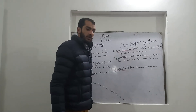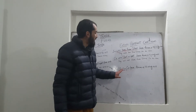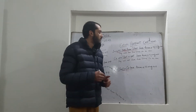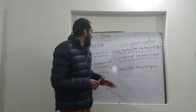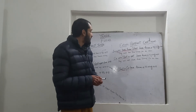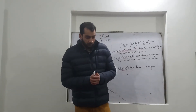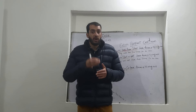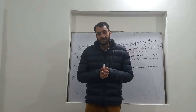For interrogative sentences, the structure is: will or shall plus subject plus have been plus verb base form plus -ing plus object. For example: Will they have been running for an hour? This concludes our topic on tenses.